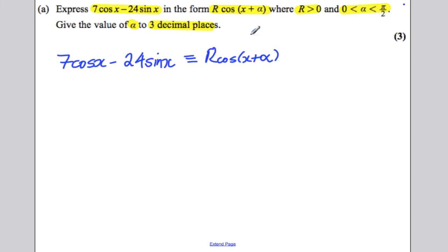So what you do is you use your formula booklet to expand the following. In the formula booklet, you have the expansion of the addition formula cos a plus b and you just multiply that all by r. So that would be equal to r cos x cos alpha subtract r sin x sin alpha. And remember, this is equal to 7 cos x subtract 24 sin x.